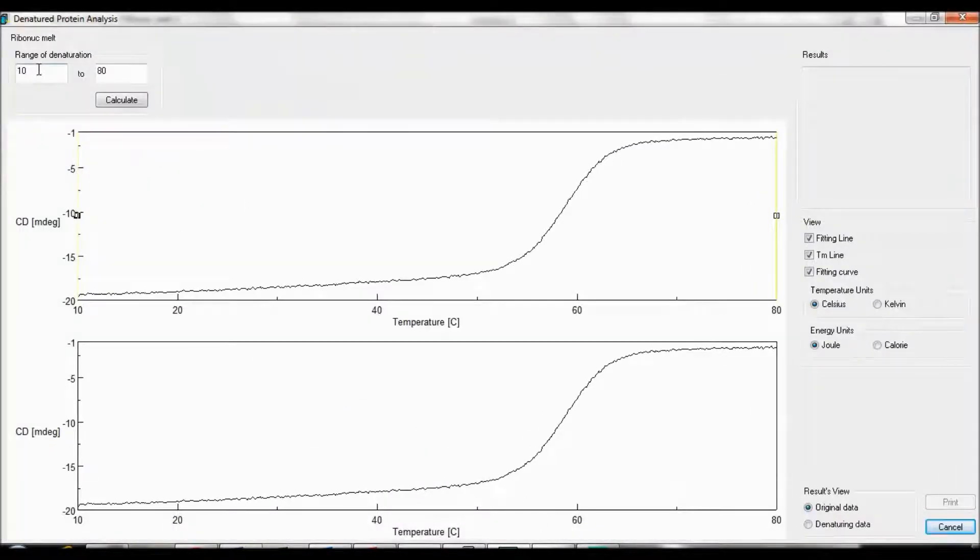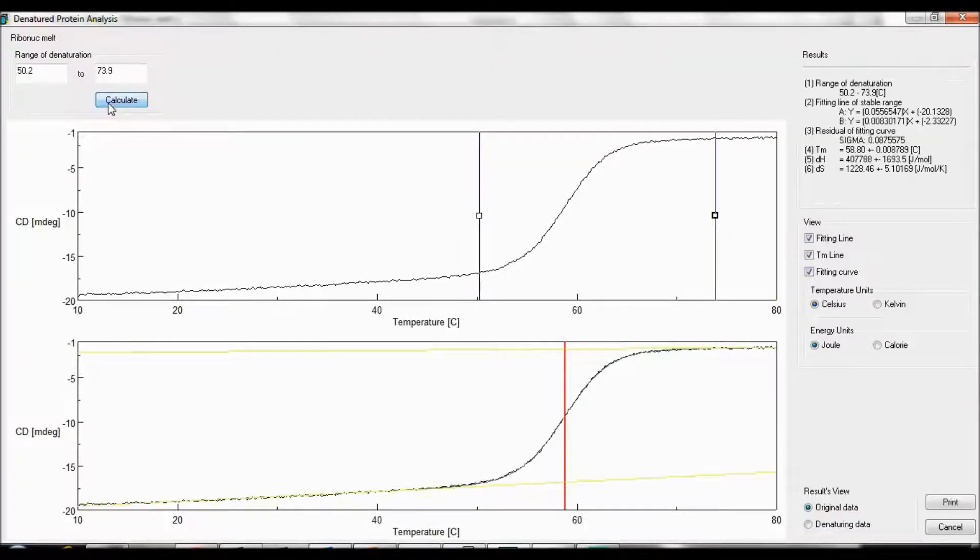First we need to enter the temperature range of denaturation. We can do so by either manually entering the temperatures here or clicking the boxes and moving the lines to the plateaus a little before and after the CD increases. Then click Calculate.